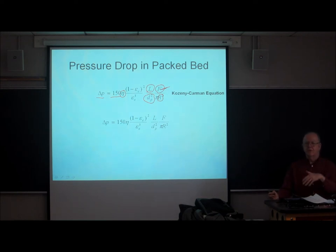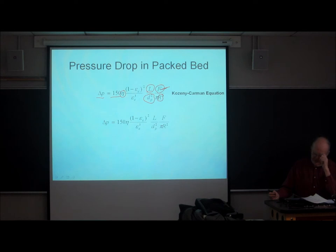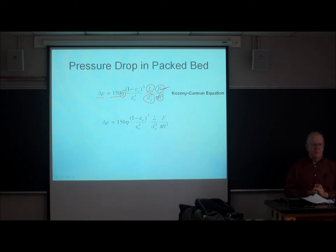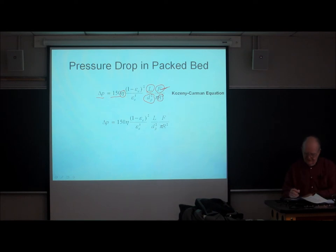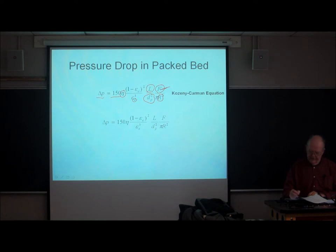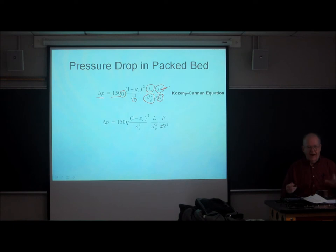The change from 3 micron particles to 1.7–1.8 micron particles crossed that barrier and required higher pressures. Try making something that delivers an absolutely constant flow rate at 1,200 bar without leaking — it's challenging. The interstitial porosity also matters with its (1 minus epsilon)² over epsilon³ dependence, meaning how the particles are packed has an appreciable effect on the measured pressure drop.